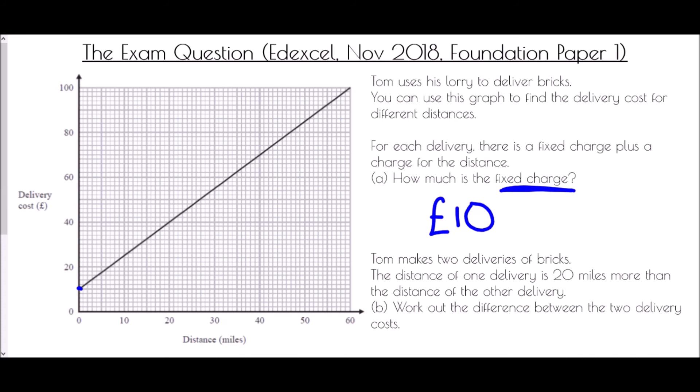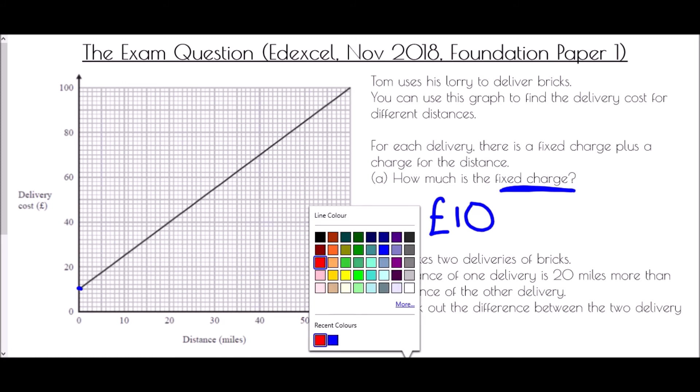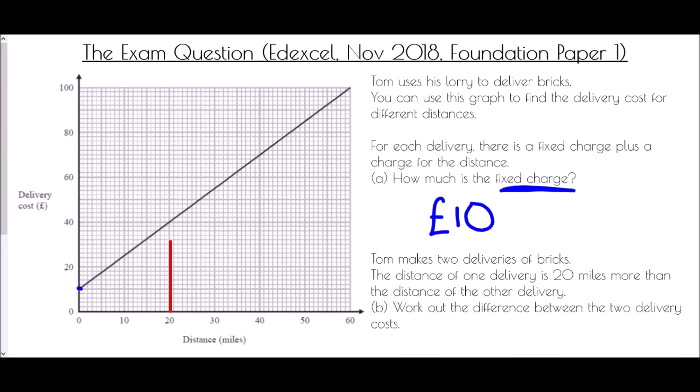The question says Tom makes two deliveries of bricks. The distance of one delivery is 20 miles more than the other. Work out the difference between the two delivery costs. For this, we need to think about straight lines again. A delivery of zero miles would cost £10. I need to find out how much a delivery 20 miles further would cost. Draw a line at 20 miles, and reading across, it comes to £40. The difference in those two costs, from 10 to 40, would be £30.